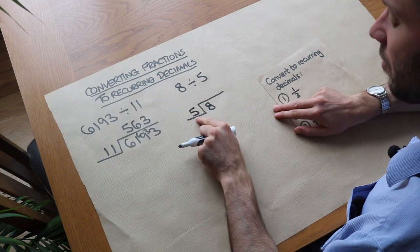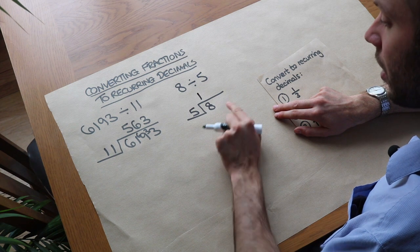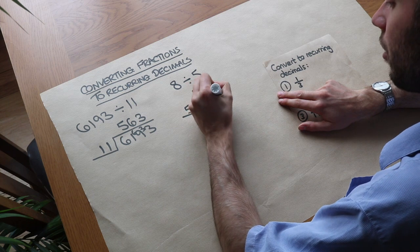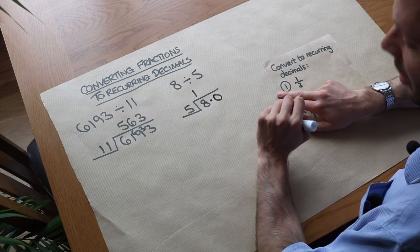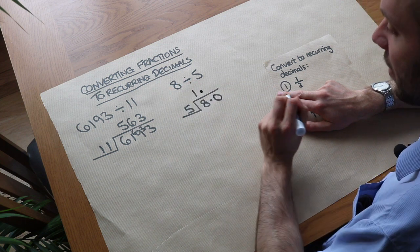We say how many times does 5 go into 8? Well it goes in once, remainder 3. But where do we put the remainder 3? Now the trick is we can add extra digits. If we put 0.0, well 8.0 is the same as 8, isn't it? I've got to therefore put this decimal point at the same place here.